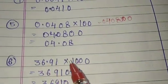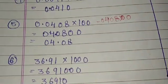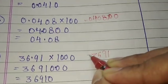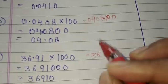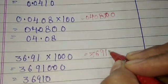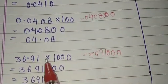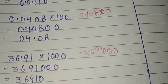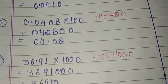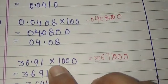Next: 36.91 into 1000. We write 3691 and add three zeros for 1000, giving 3691000. Then count the digits after the decimal and place the point accordingly.